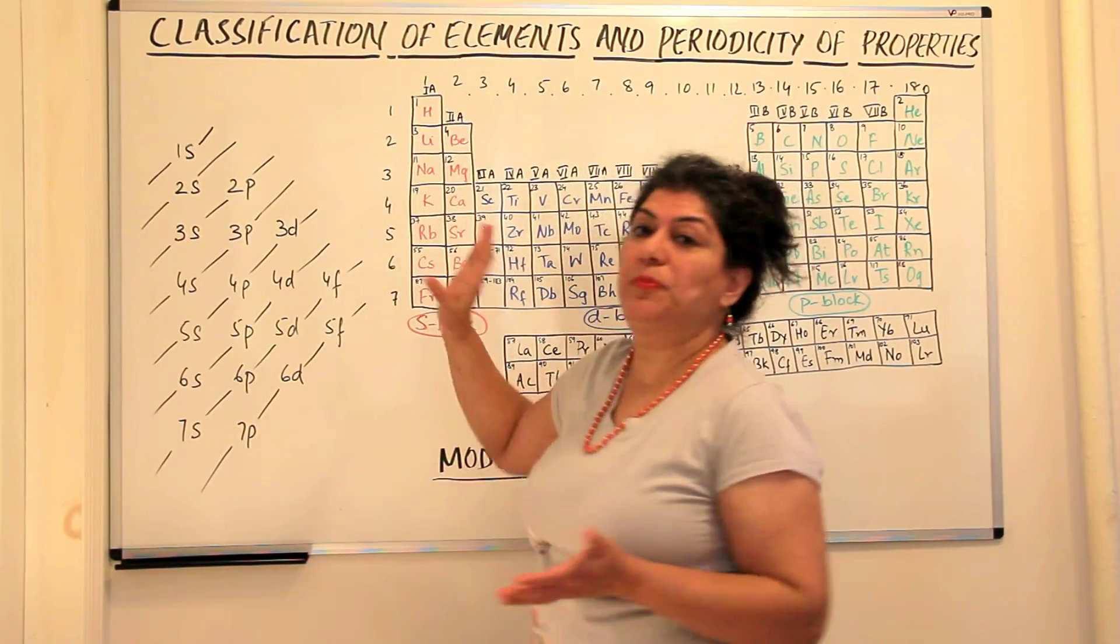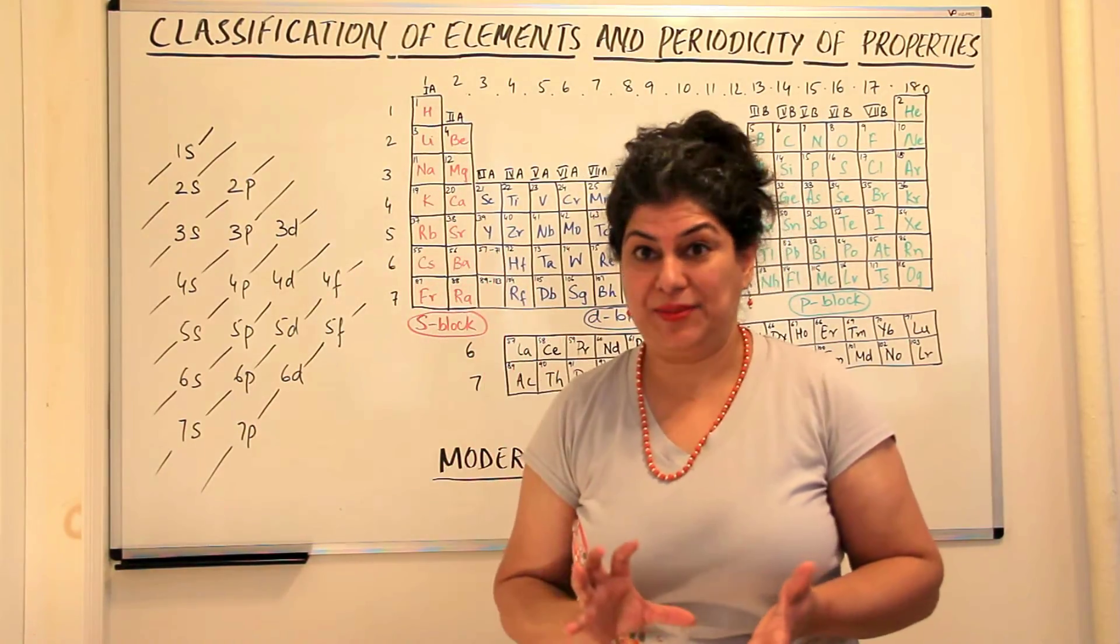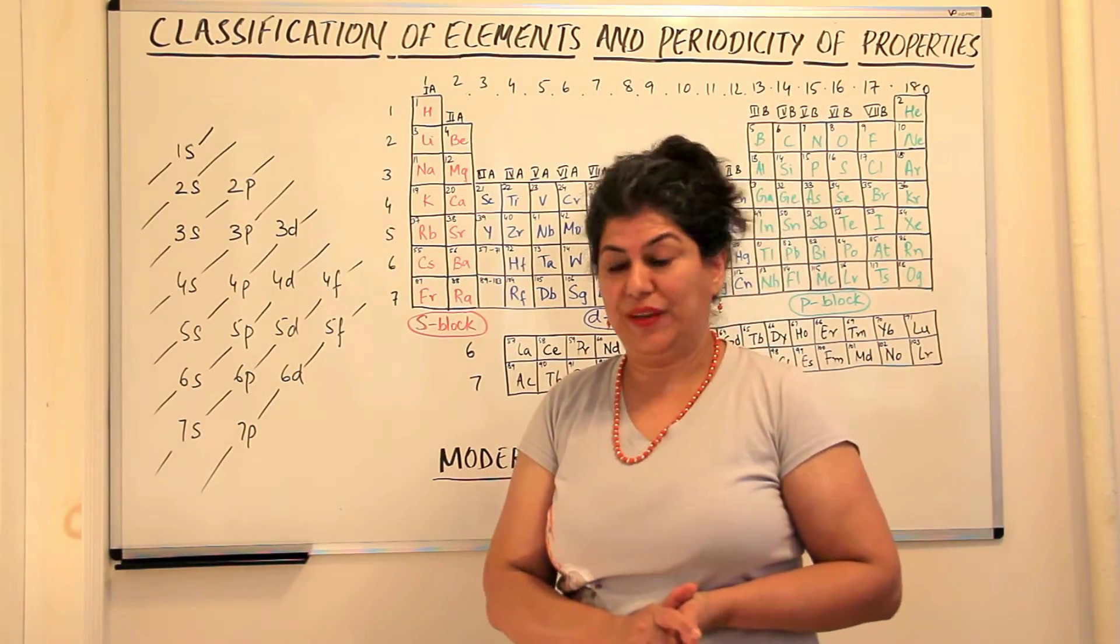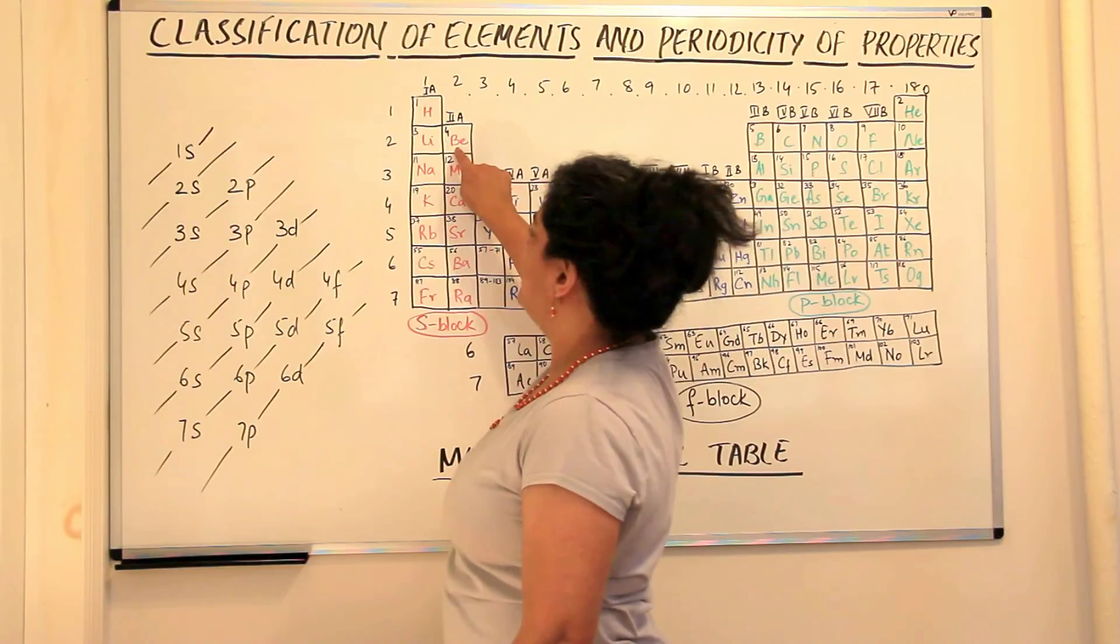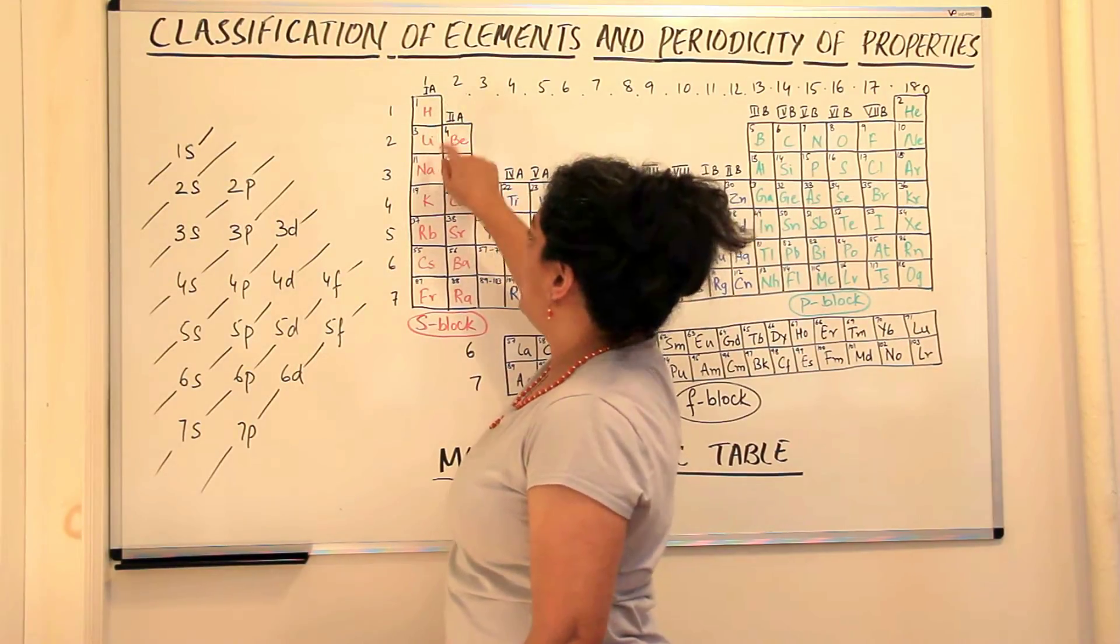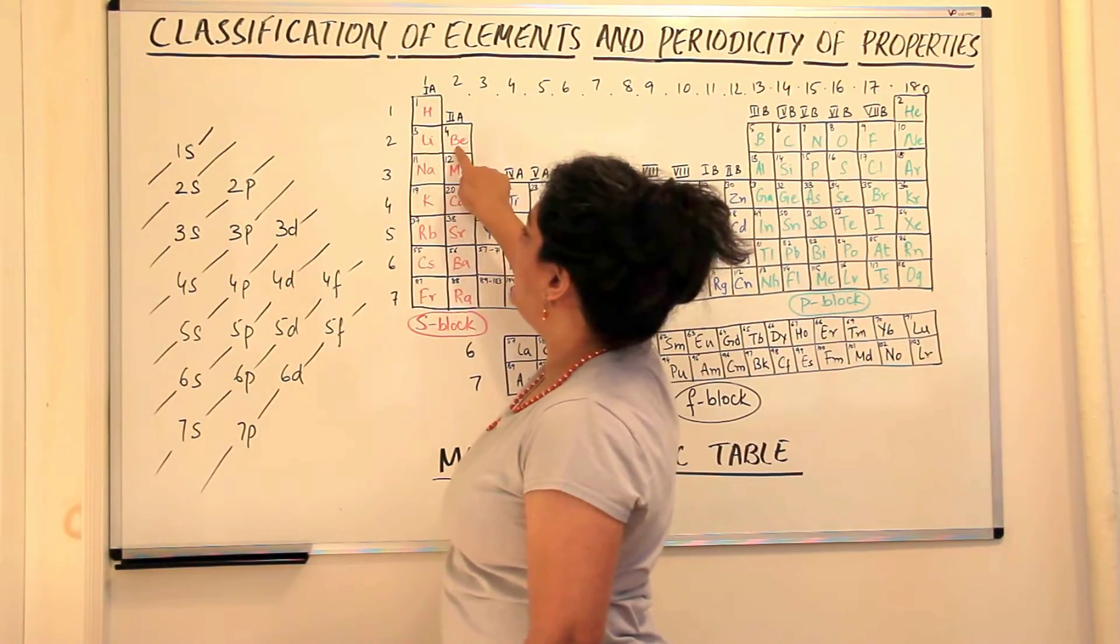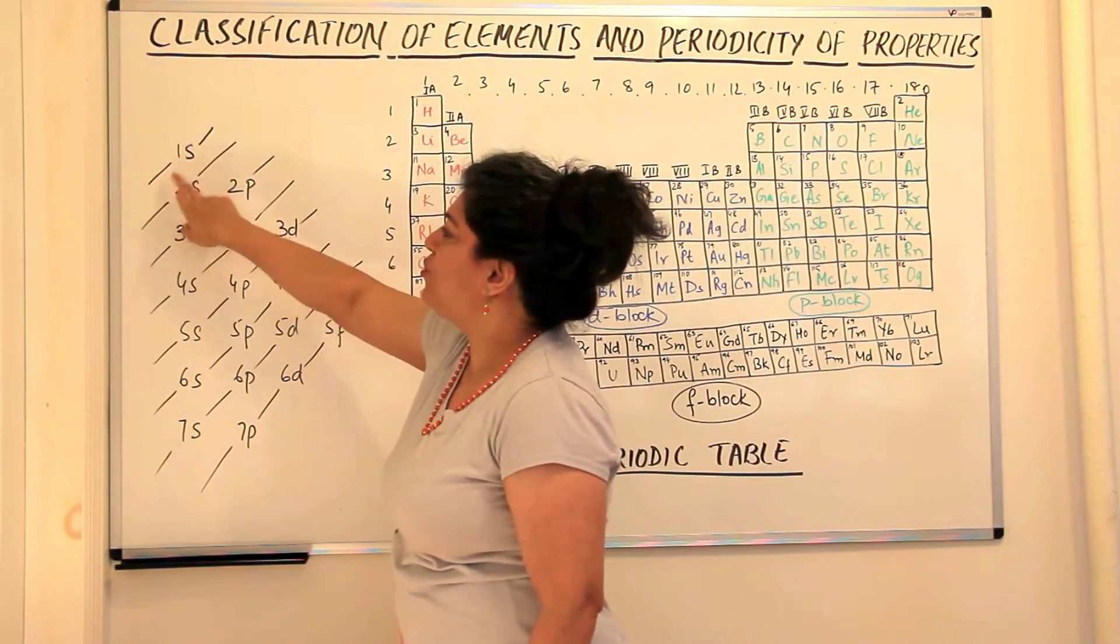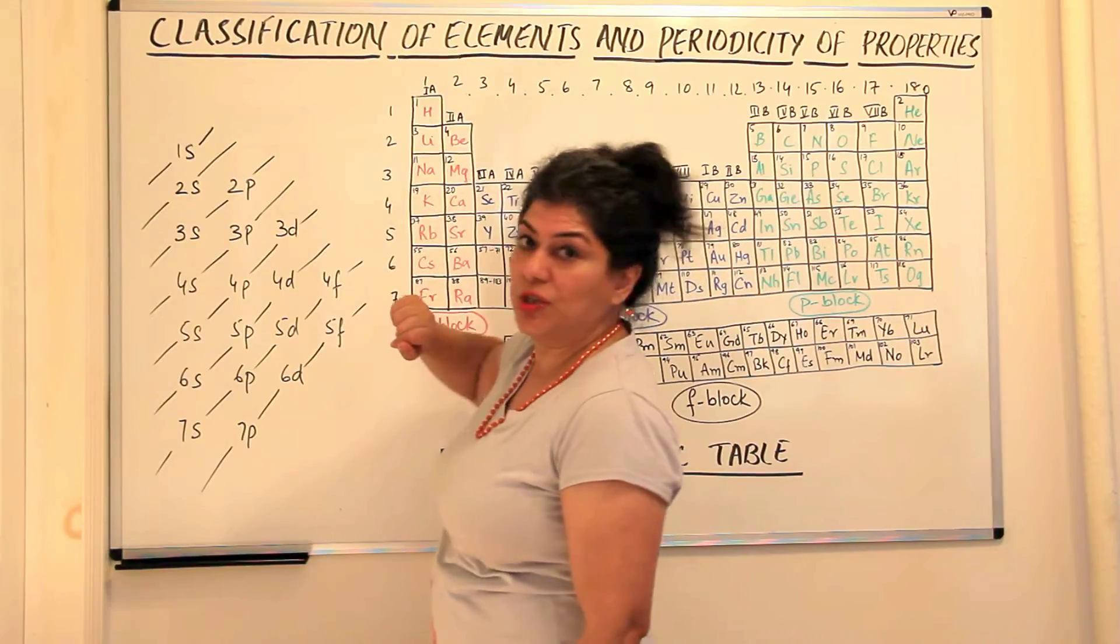So in these first two groups it is the s orbitals which are being filled up. The s orbital of different principal quantum numbers of different shells. So the first group has one electron in the s orbital and the second group has two electrons in the s orbital of that shell. So that decides the position of the element according to its atomic number and according to its electronic configuration. Beryllium has four, so the first two electrons go to 1s and the next two go to 2s, therefore beryllium has this position.